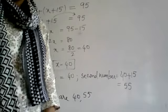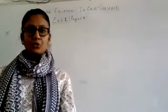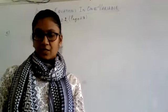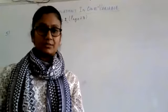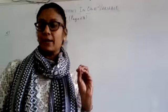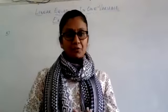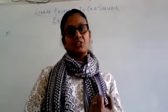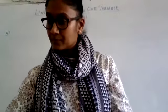Now we will move on to the next problem. Two numbers are in the ratio 5 is to 3. If they differ by 18, what are the numbers? The ratio of the two numbers is given as 5:3 and they differ by 18. What do you understand by differ by 18? It means the difference between the two numbers is 18. These are two pieces of information or two conditions given to us, using which we should be able to find the two numbers.